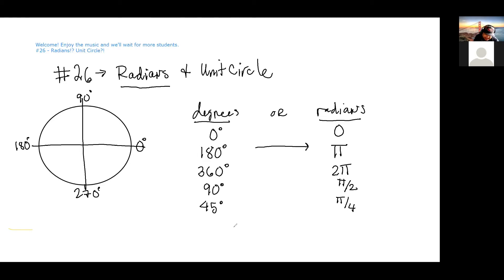Okay, here we go. Degrees divided by 180 is the same thing as radians divided by pi. This is the conversion.